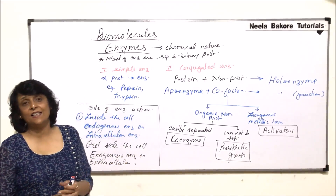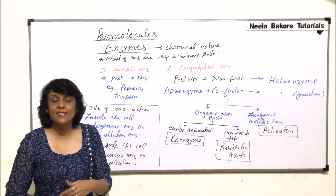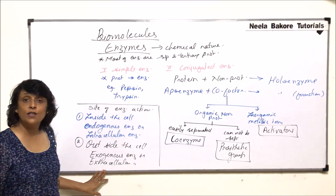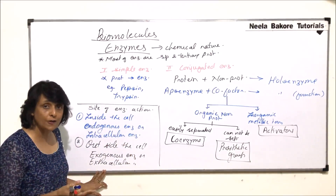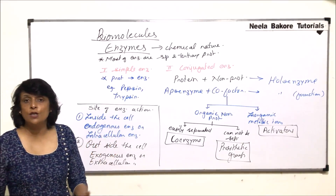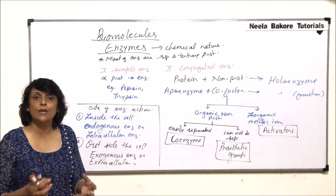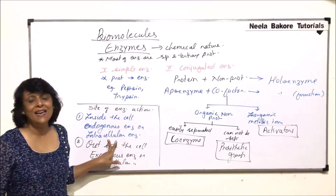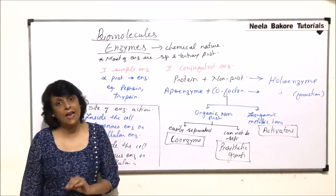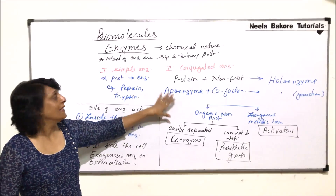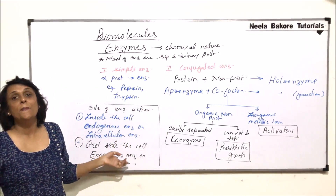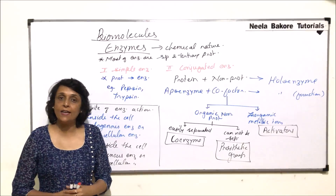Extracellular enzymes are secreted by various cells and act on food in the lumen of the alimentary canal. Since they work in the lumen, they are working outside the cell, making them extracellular. In many cases, like unicellular organisms, complete digestion takes place inside the cell — that would be intracellular. This classification is based on the site where the enzymes work.